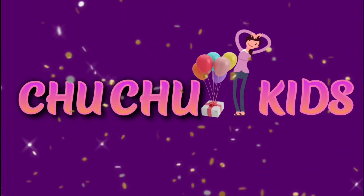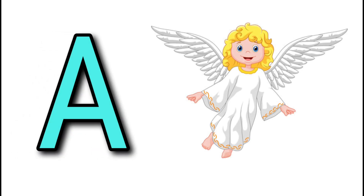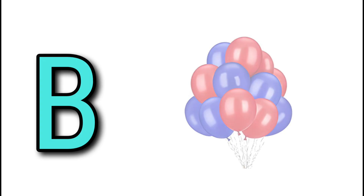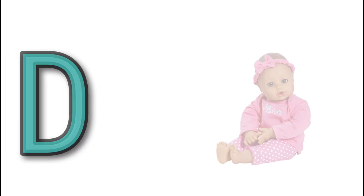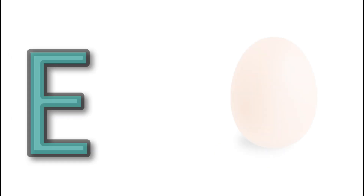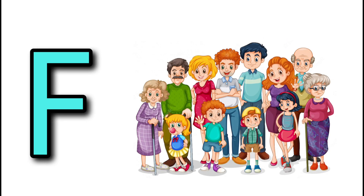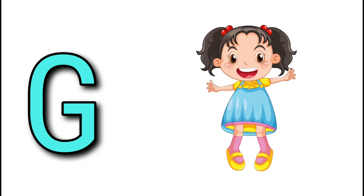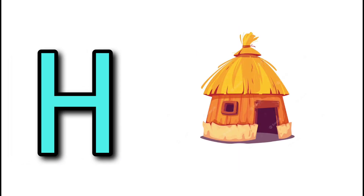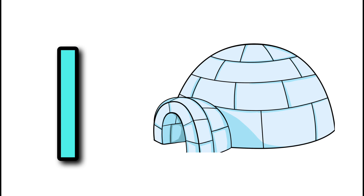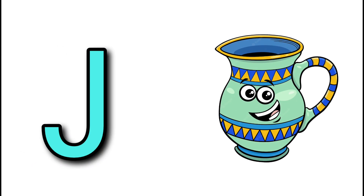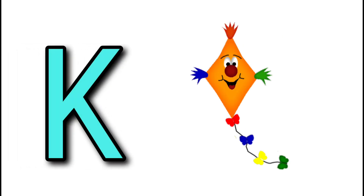Choo Choo Kids. A for Angel, B for Balloons, C for Cow, D for Doll, E for Egg, F for Family, G for Girl, H for Heart, I for Igloo, J for Jug, K for Kite, L for Lemon, M for Mouth.